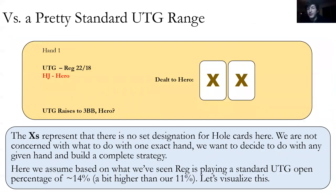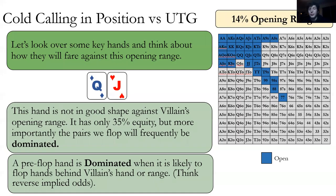Here's an example versus a standard under-the-gun opening range. The reg is running 22/18 — pretty much close to perfect. We'll assume a standard under-the-gun open percentage of around 14%, a bit higher than our conservative 11%. We plug in this 14% default and get the chart on the right — these are the hands we expect villain to be open-raising. We're going to look at a bunch of hands we could consider calling with and see how we fare against this opening range.